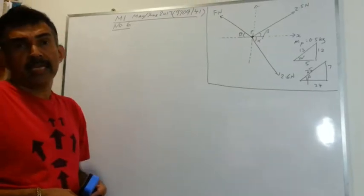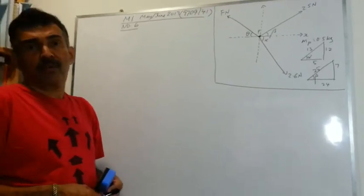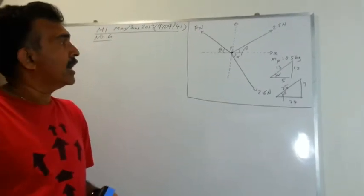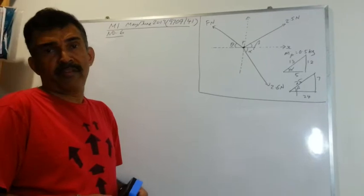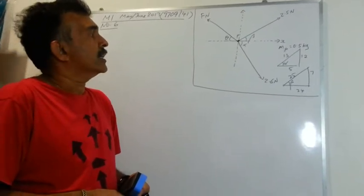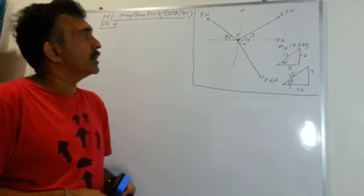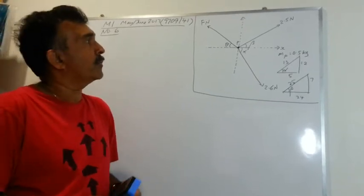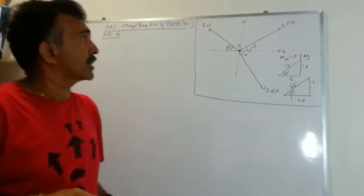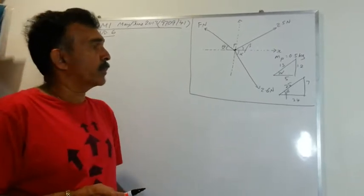We are given a system of three forces acting on an object P of mass 0.5 kg. The magnitude of two forces are given as 2.5 N and 2.6 N.